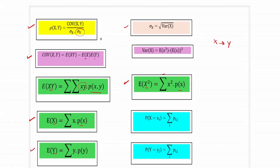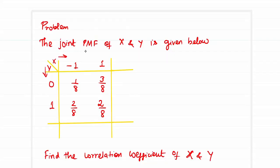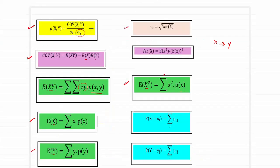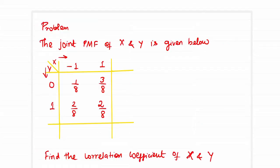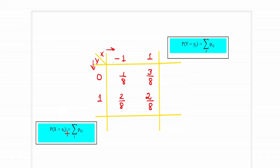We will apply these steps to a problem to estimate the correlation coefficient. The joint probability mass function of the two-dimensional random variable x and y is given as follows: x takes values minus 1 and plus 1; y takes values 0 and 1. The joint probabilities are 1 by 8, 3 by 8, 2 by 8, and 2 by 8. We need to find the correlation coefficient of x and y. Our first target is to estimate p of x and p of y.